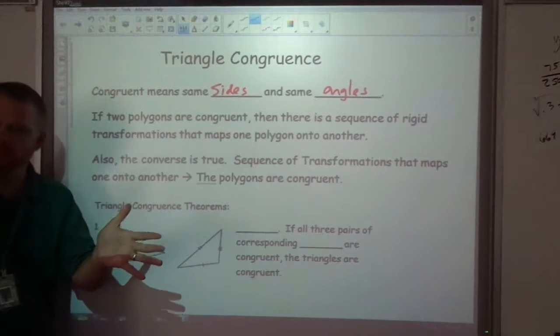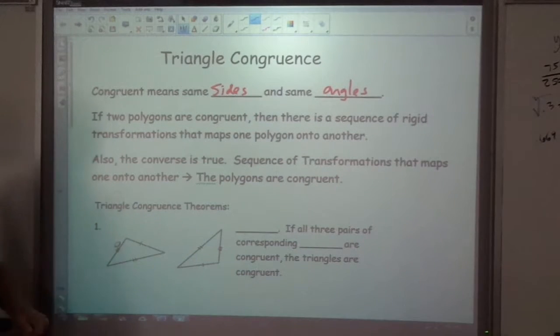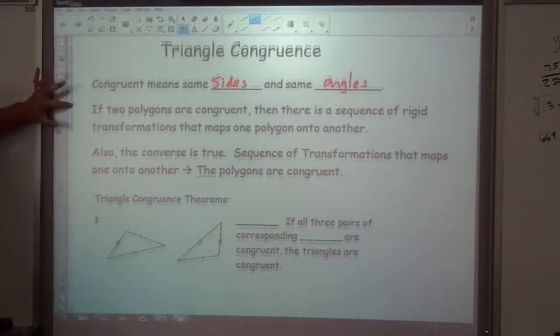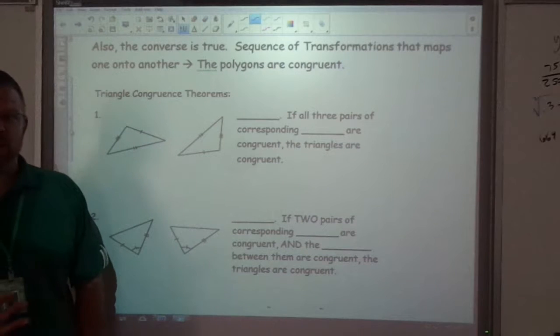Anytime you have triangles that you're like, hey, I found a way that this can work, that proves that they're congruent. There's also some shortcuts here. There's five triangle congruence theorems that give us a shortcut.